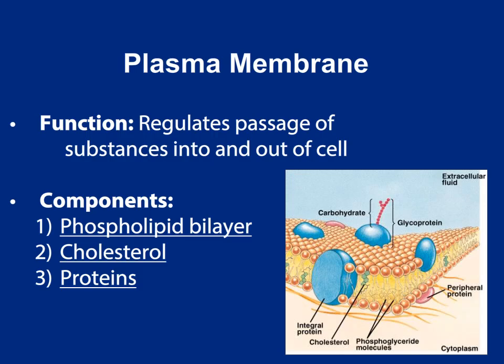Now we're going to move outside and talk about the cell membrane, also called the plasma membrane. It's a very important structure because it regulates the passage of substances into and out of the cell. The three most important molecules that make up the plasma membrane are phospholipids, cholesterol, and proteins.